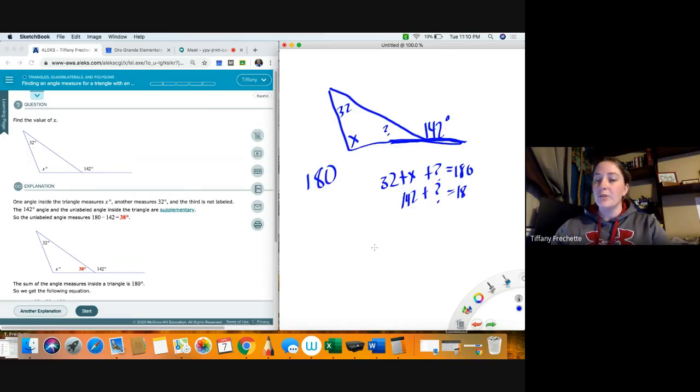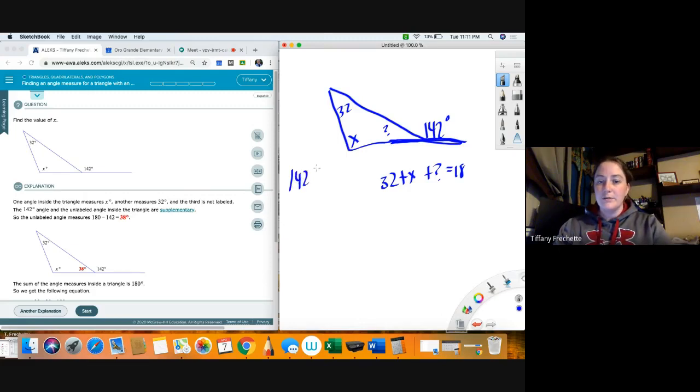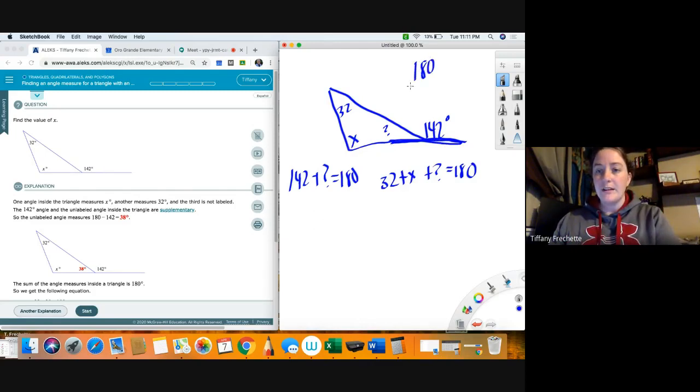So what I want to do real quick, because I want to show you why what they're having you do is subtract from 180 degrees. I'm gonna move a few things really quick. Alright, so it was 142 plus question mark equals 180 degrees here. So what they're having you do is subtract from 180 degrees for 142, so 180 minus 142 equals 38. So that's how they got the 38 that's in here - they subtracted from 180.